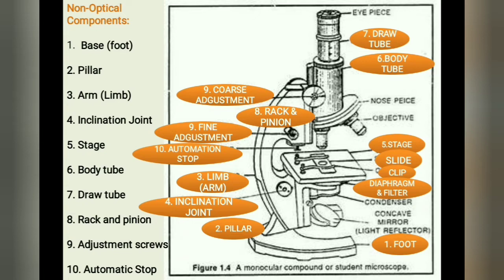First we are going to see in detail about the non-optical components. There are 10 different non-optical components in the compound microscope: the base (otherwise called the foot), pillar, arm, insulation joint, stage, body tube, draw tube, rack and pinion, adjustment screws, and automatic stop.